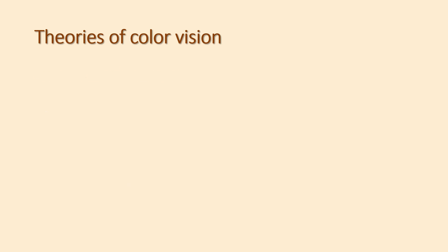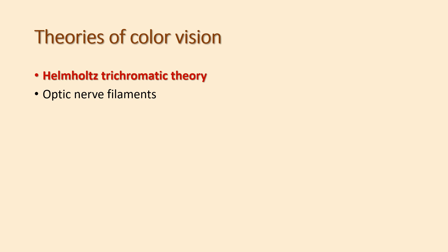The Helm-Kohls trichromatic theory. The sensitive elements of the optic nerve respond selectively to one or other of the three primary colors. This is the Helm-Kohls trichromatic theory.